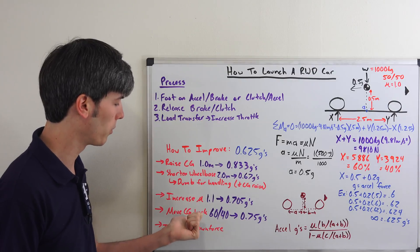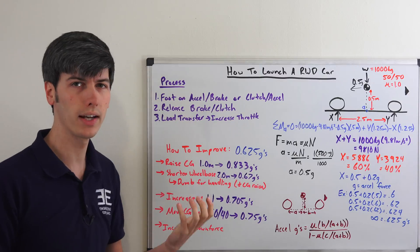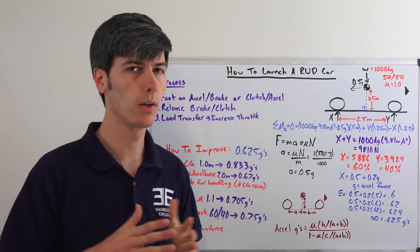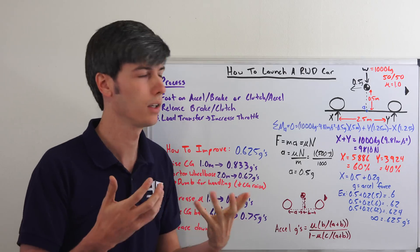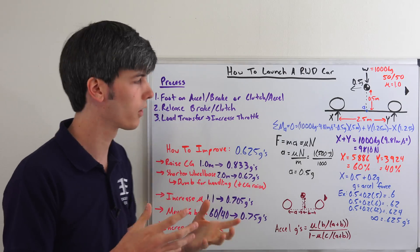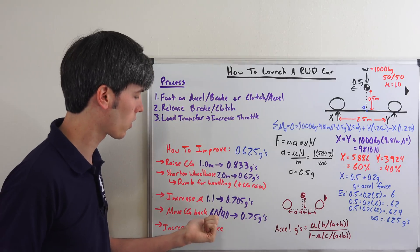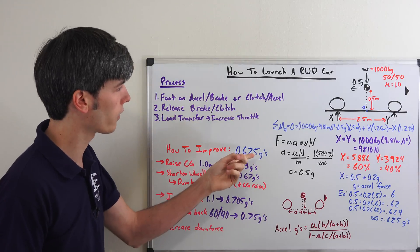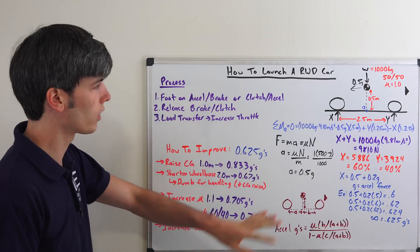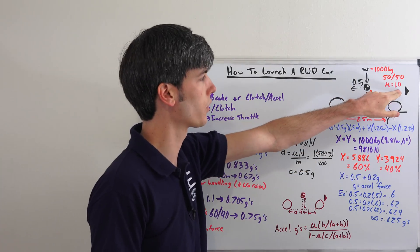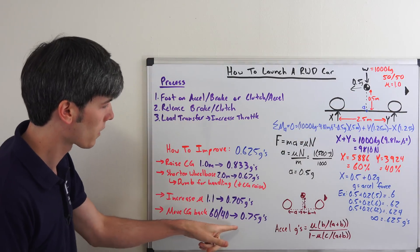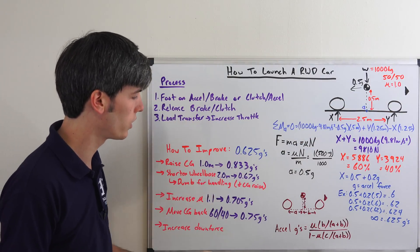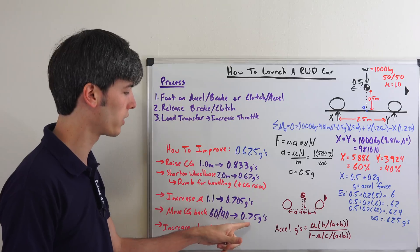You can also do this by moving the center of gravity back. So from a design standpoint, having a 50-50 weight distribution isn't always ideal. For example, in a rear wheel drive car because you may not have maximum acceleration. So let's say the car has a 60-40 split rather than a 50-50 split. All else held constant, same vehicle, same coefficient of friction, same center of gravity height and all that. It changes from 0.625 g's to a maximum acceleration of 0.75 g's.